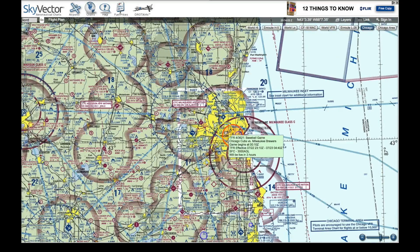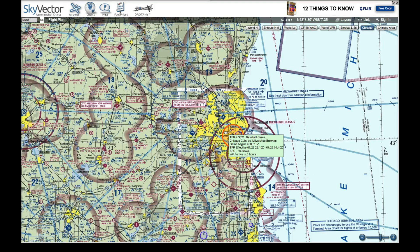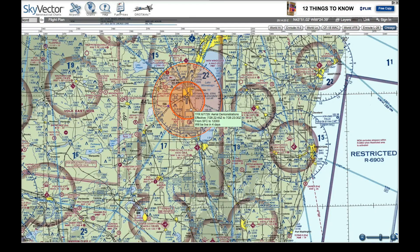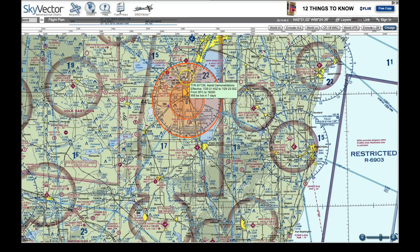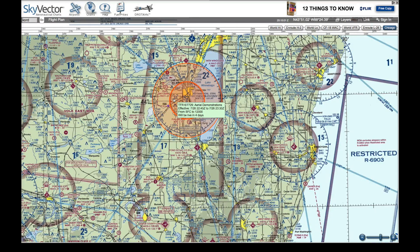You'll also notice TFRs — temporary flight restrictions. This one happens to be a Chicago Cubs versus Milwaukee Brewers baseball game at Miller Park. Going north, there's a really large one around Oshkosh because AirVenture 2016 starts in four days. That TFR is active from the surface up to 12,000 feet, so unless you're on a flight plan or operating at the airport, you can't just launch your drone if you live five miles away.